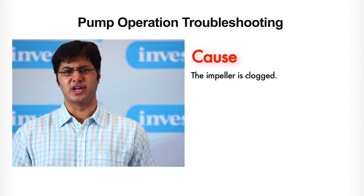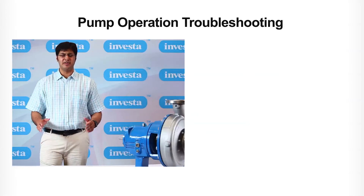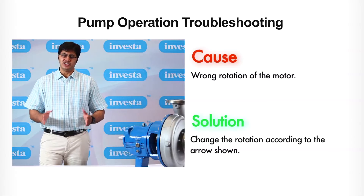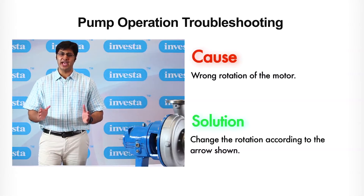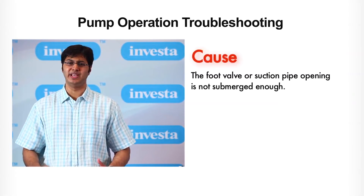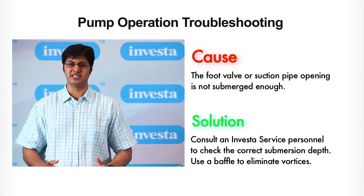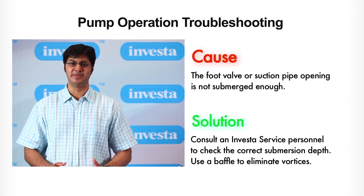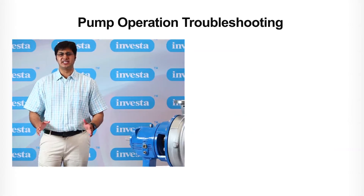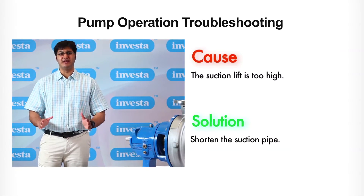Number three: the impeller is clogged — back flush the pump to clean the impeller. Number four: wrong rotation of the motor — change the rotation according to the arrow shown. Number five: the foot valve or suction pipe opening is not submerged enough — consult INVEST-UP service personnel to check the correct submerged depth. Use a baffle to eliminate vortices.